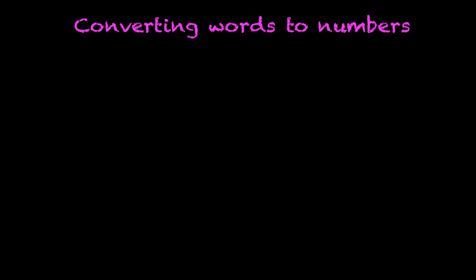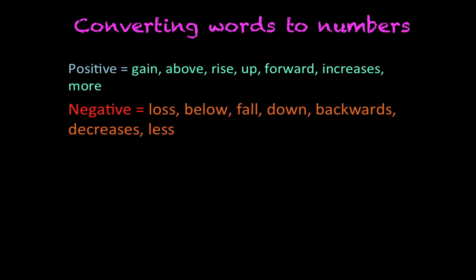All right, now converting words to numbers. So you could take words and apply them to positive or negative. For instance, positive could mean gain, above, rise, up, forward, increases, more. Anytime you see those kind of words, they could trigger that it's a positive number. A negative could be in terms of loss, below, fall, down, backwards, decreases, less. All these words could represent a negative value.